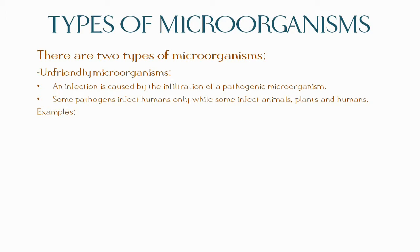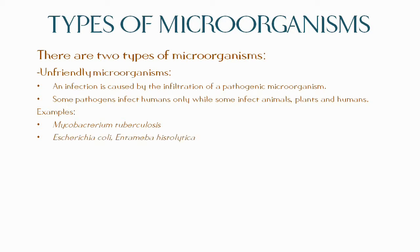Some examples of unfriendly microorganisms include Mycobacterium tuberculosis. This pathogen is the cause of the fatal disease tuberculosis. This disease typically attacks the lungs but can also affect other parts of the body. Escherichia coli and Entamoeba histolytica are the pathogens responsible for causing diarrheal diseases.